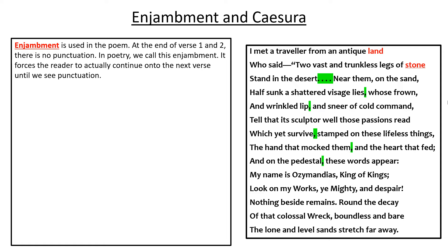Enjambment is used in the poem. At the end of verses 1 and 2 there is no punctuation. Now, typically the way you read this poem is as follows: 'I met a traveller from an antique land who said, two vast and trunkless legs of stone stand in a desert.' Do you see how I didn't stop at the end of verse 1 and 2? I continued on.